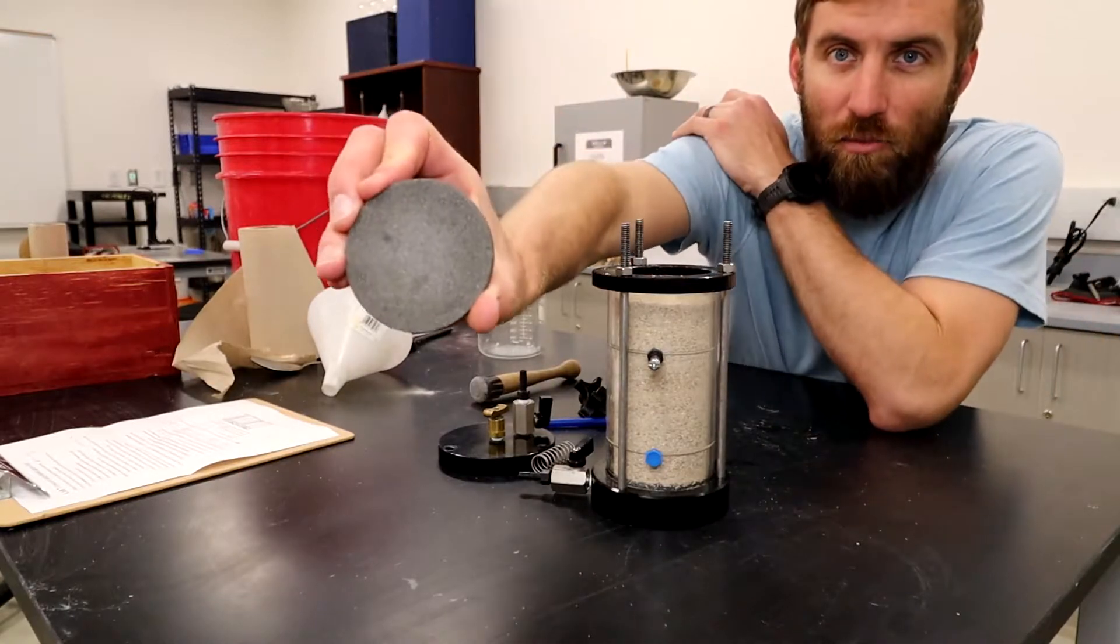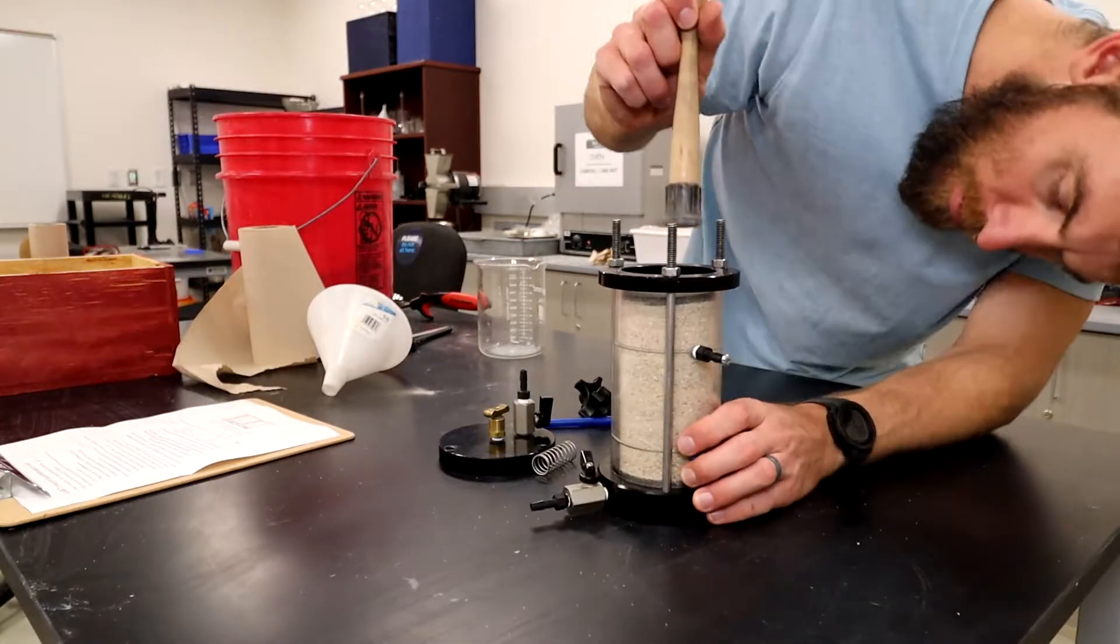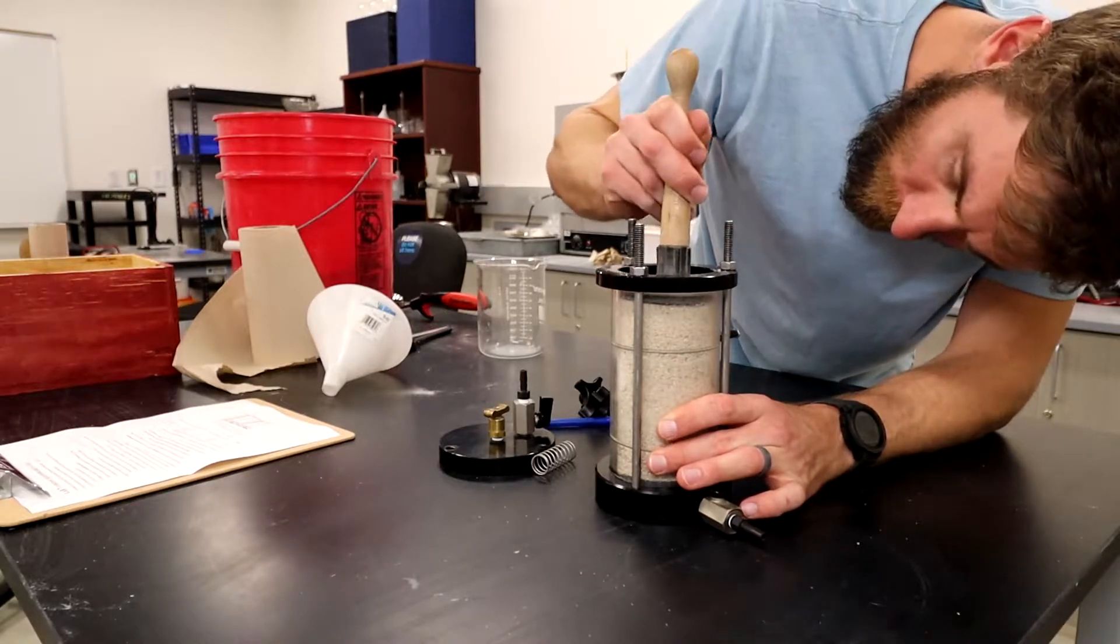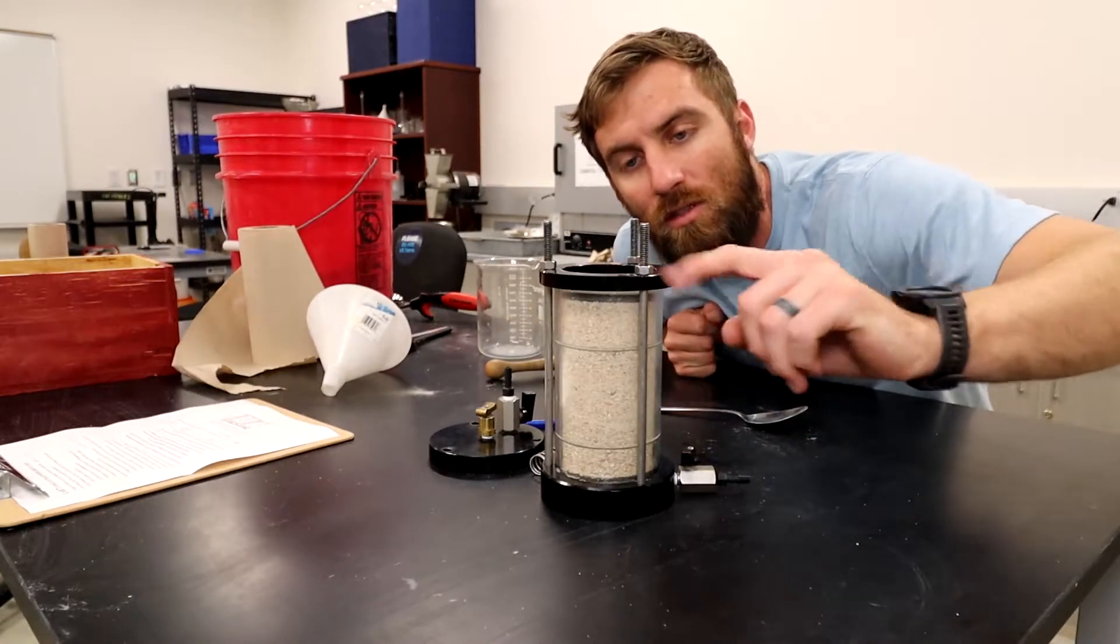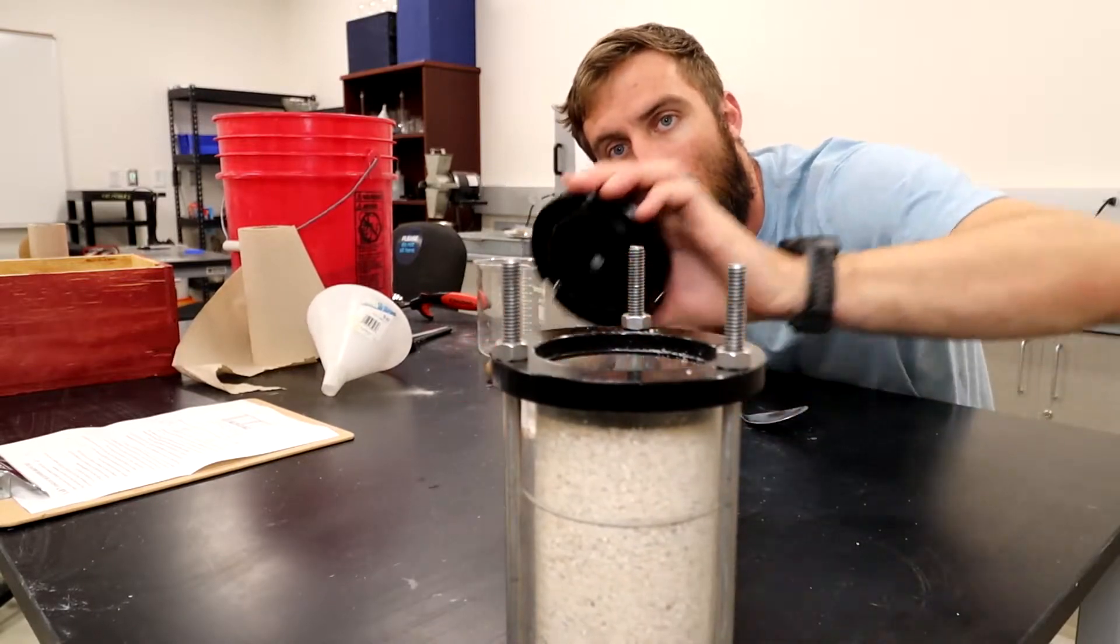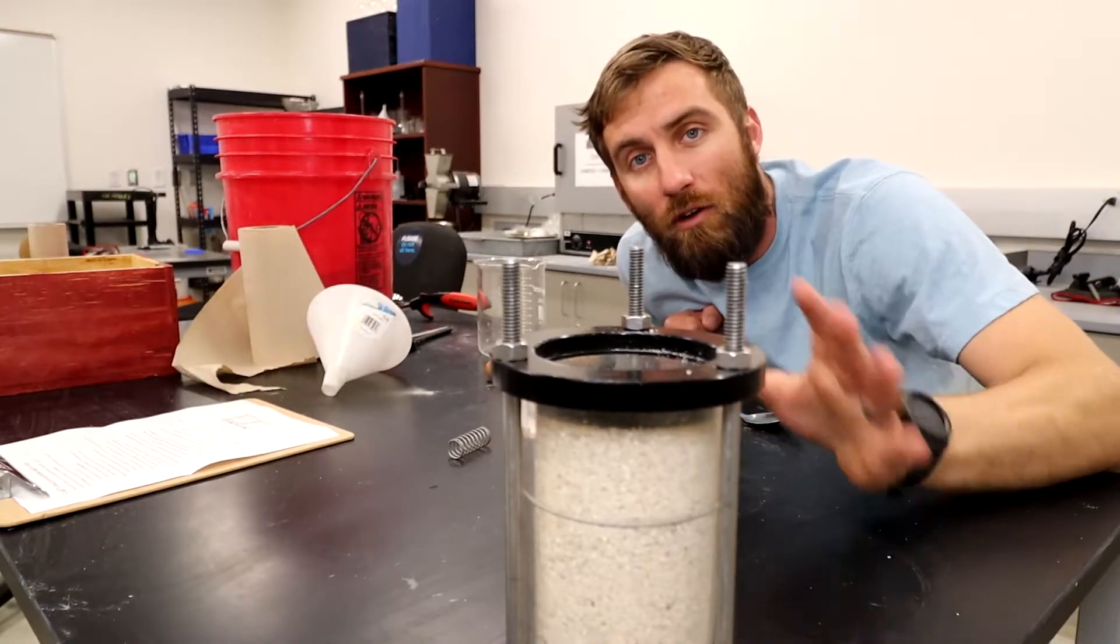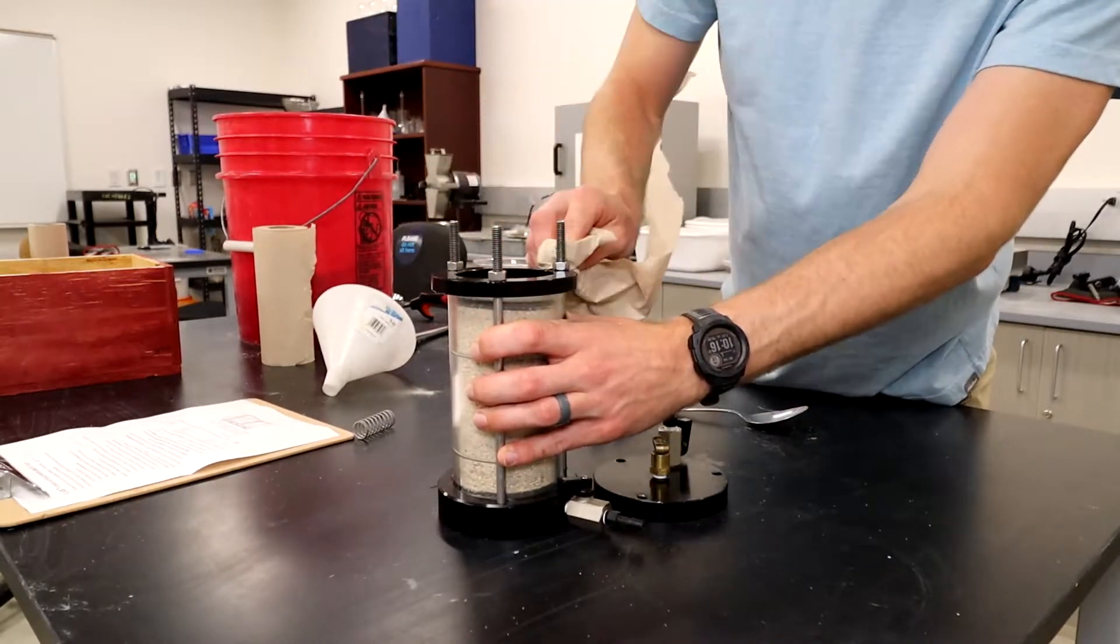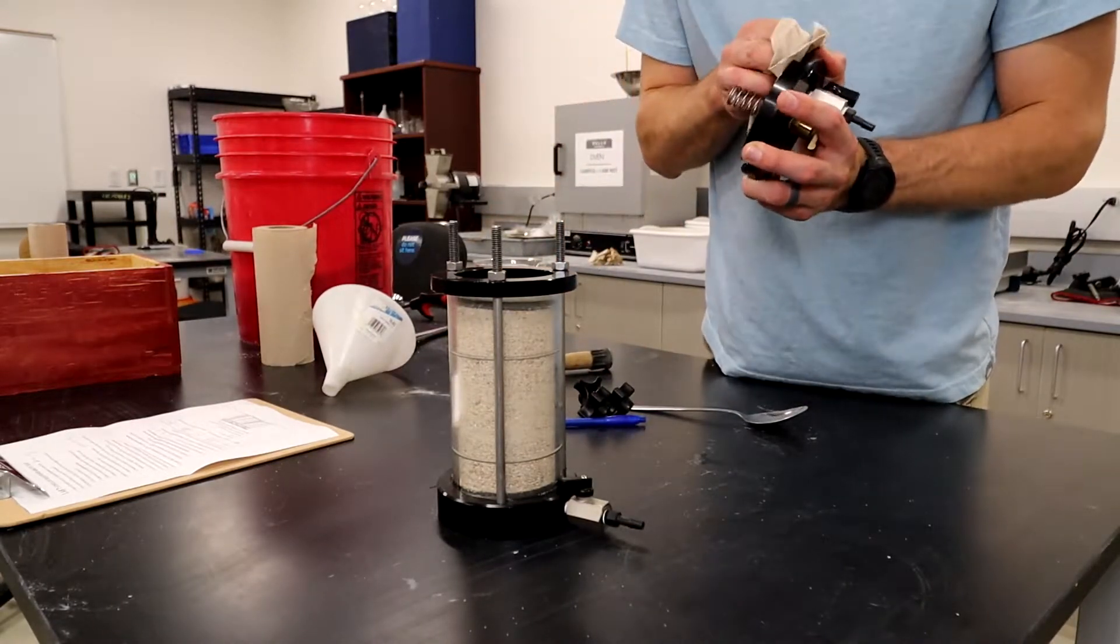Now we need to put another porous stone on top because we want it to be sandwiched in between everything. And now we need to make sure that there is no sand along this top little ridge here because if there is sand, that O-ring won't have a good seal and then we'll have water leaking out of our permeameter, which would be bad.